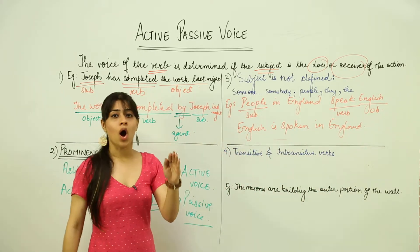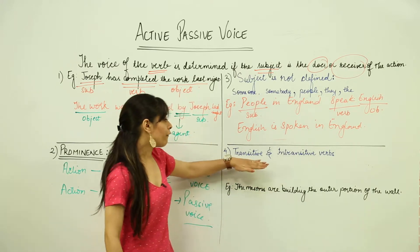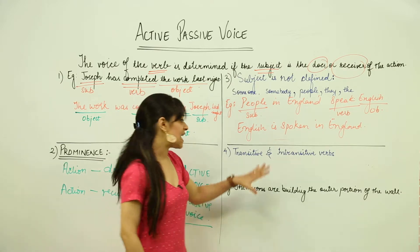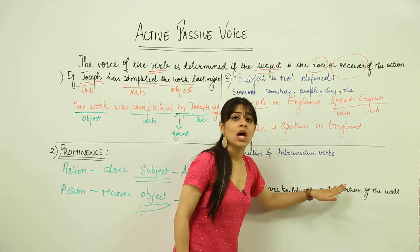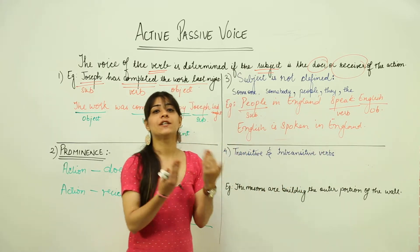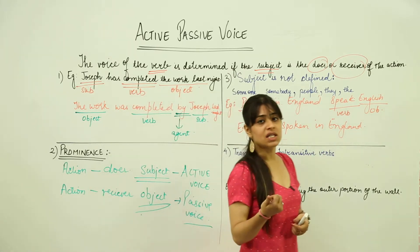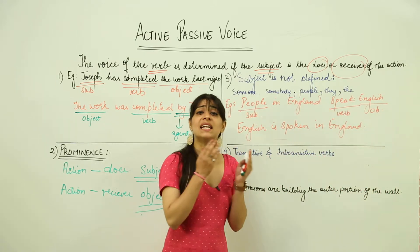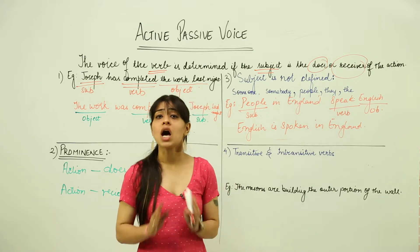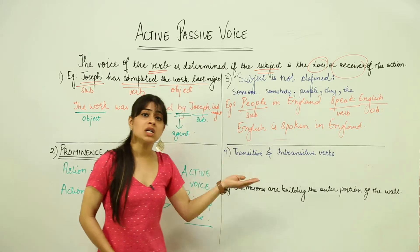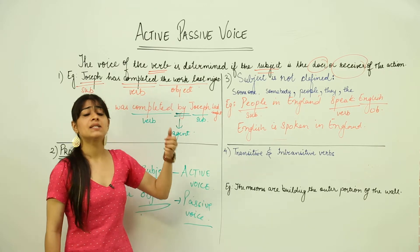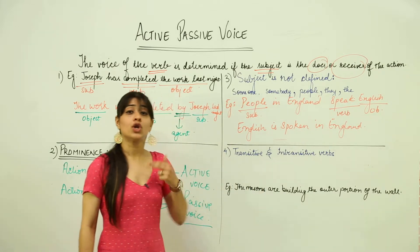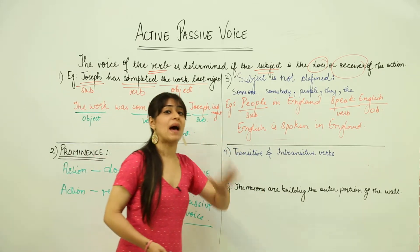Moving on to the rule concerning transitive and intransitive verbs. If a sentence has a transitive verb, we can change it from active to passive voice. But if it is an intransitive verb, it cannot be changed, because intransitive verbs do not have an object. To convert from active to passive voice, it is mandatory to have a subject, a verb, and an object.